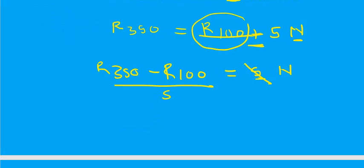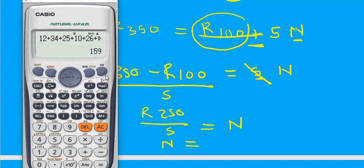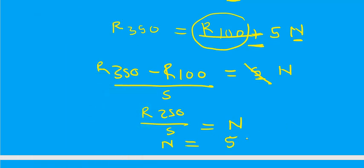So 350 minus 100 is 250. 250 divided by 5 will give us N. So if you go to your calculator, 250 divided by 5 will give you 50. So the value of N is 50.